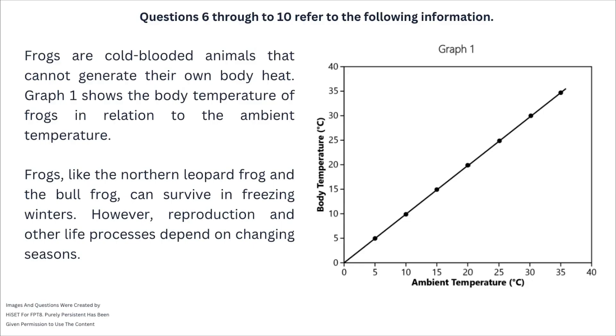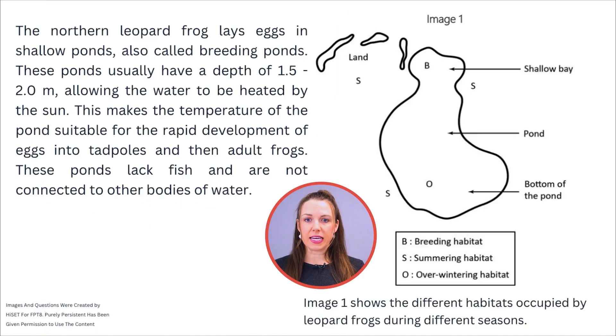Let's jump right in. The first thing I like to do is take a look at the picture. Here we have a graph — it's linear, a straight line. We have ambient temperature on the bottom, which is the temperature of the surroundings, and on the y-axis we have body temperature. As the ambient temperature goes up, the body temperature goes up — they increase together.